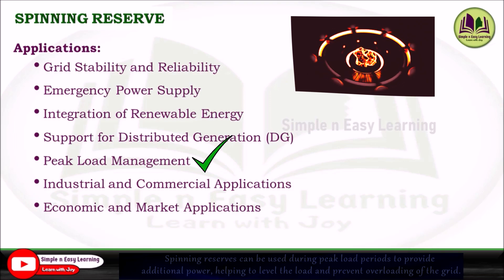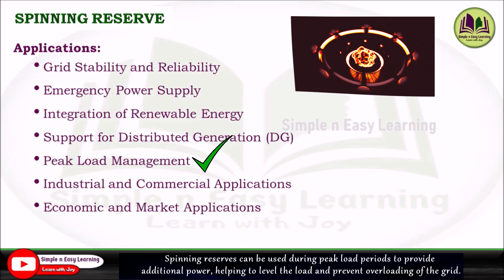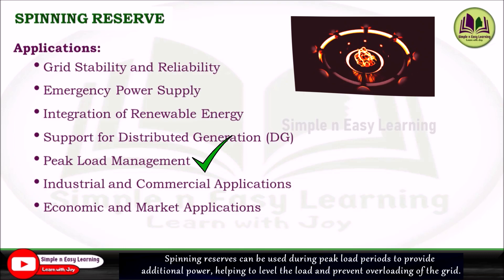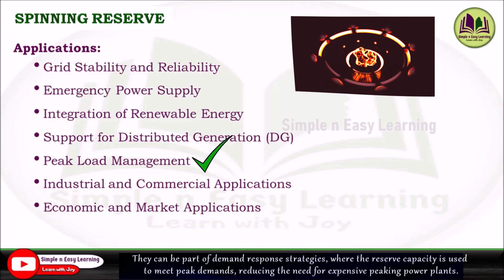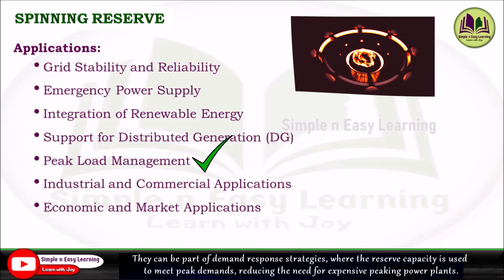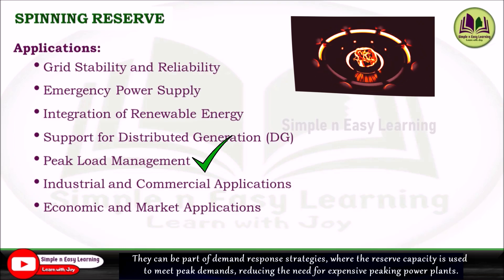The next application is peak load demand. Spinning reserves can be used during peak load periods to provide additional power, helping to level the load and prevent overloading of the grid. They can be part of demand response strategies where reserve capacity is used to meet peak demands, reducing the need for expensive peak power plants.